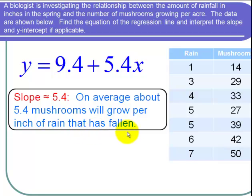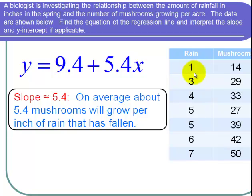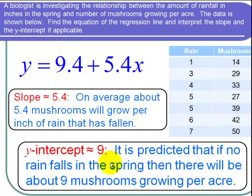The y-intercept is 9.4. To interpret the y-intercept, first notice that it means X is equal to zero — or the amount of rainfall is equal to zero. Zero is not far from where the data lies; we have a value of one, so it does make some sense to extrapolate to zero. It is predicted that if no rain falls in the spring, then there will be about nine mushrooms growing per acre. And I'm done with the problem.